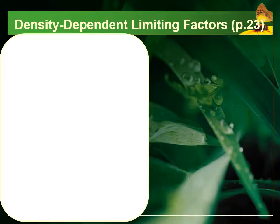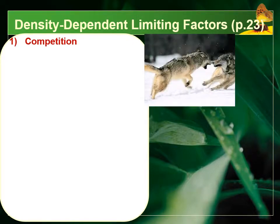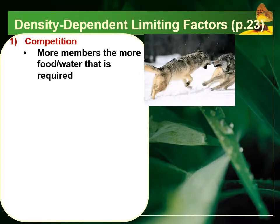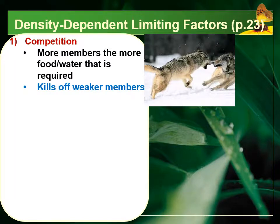For density dependent factors, competition is a clear example — it gets worse as we increase the number of individuals. Imagine if we doubled the number of 9th and 10th graders getting food during the same lunch period: the competition and stress would be significantly higher than if we cut the number in half. More members means more food and water is required, so everyone starts competing over limited resources. This typically results in weaker individuals being killed off and becomes a major aspect of evolution — which individuals survive the competition.